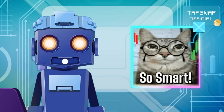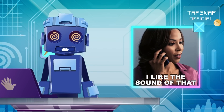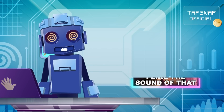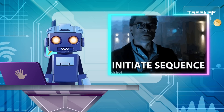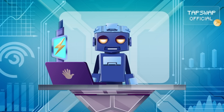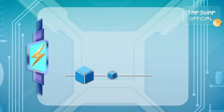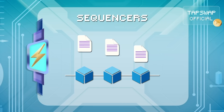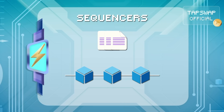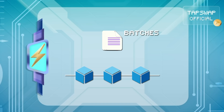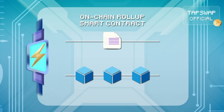What a smart algorithm. It increases the number of transactions, reduces fees, and maintains the security and decentralization of the blockchain. The first step is sequencing transactions. Operators called sequencers collect transactions from users, process them off-chain, and bundle them into batches. These batches are submitted to the on-chain rollup smart contract.